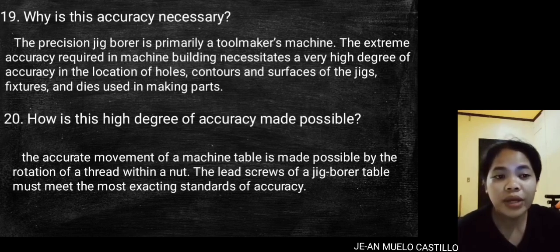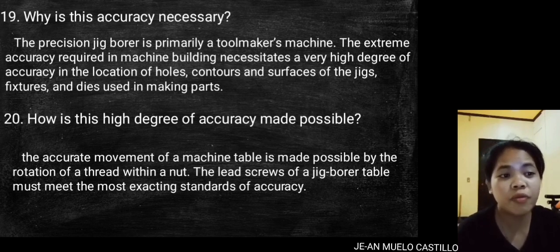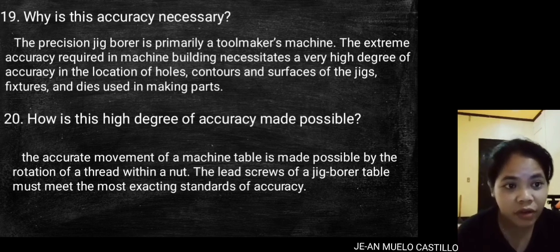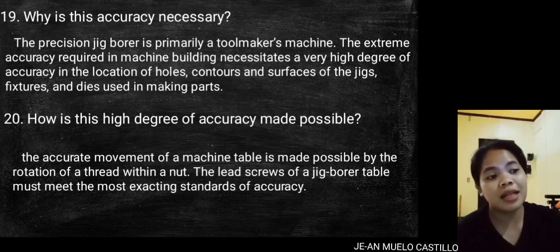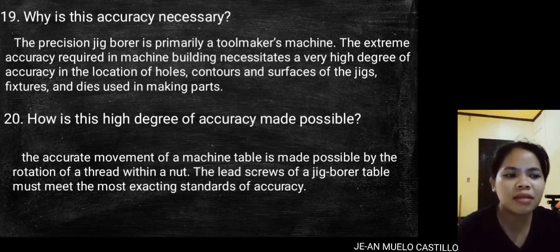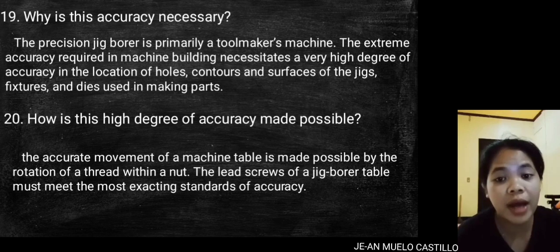How is this high degree of accuracy made possible? The accurate movement of a machine table is made possible by the rotation of a thread within a nut. The lead screws of a jig borer table must meet the most exacting standards of accuracy.